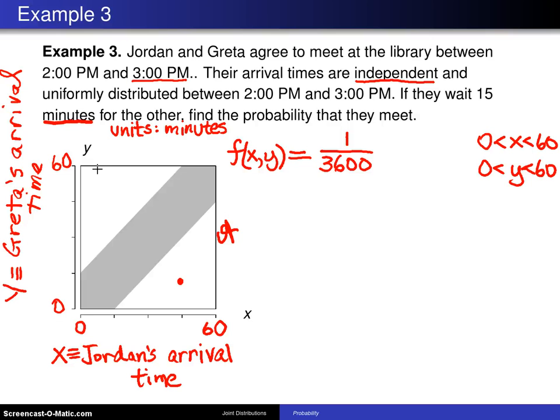Now the next thing we want to find is we want to find the probability that Jordan and Greta will meet, which is to say find the probability that the absolute value of x minus y is less than 15 minutes.